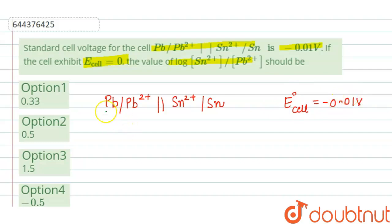Now if we write the reactions at anode and cathode: at anode, oxidation occurs, which is the loss of electrons. At anode: Pb → Pb2+ + 2e-. At cathode, reduction occurs, which is the gain of electrons: Sn2+ + 2e- → Sn.